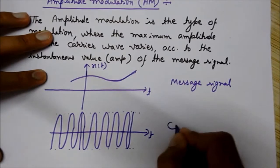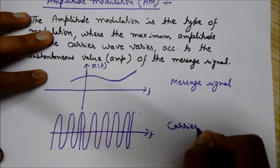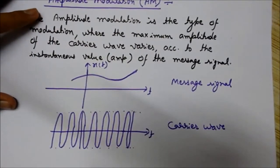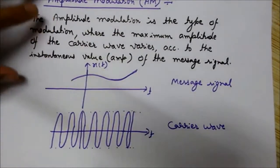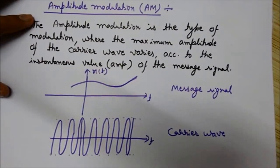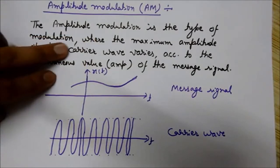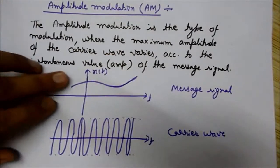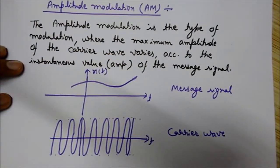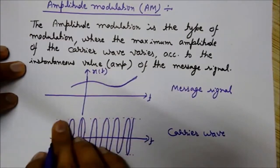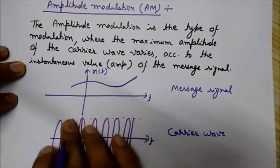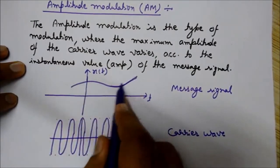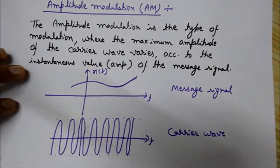This is the carrier wave — a high frequency wave having a constant amplitude. As per the definition of amplitude modulation, the maximum amplitude of the carrier wave varies according to the instantaneous value of the message signal. So we will vary the maximum amplitude of this constant-amplitude carrier wave according to the shape of the message signal.